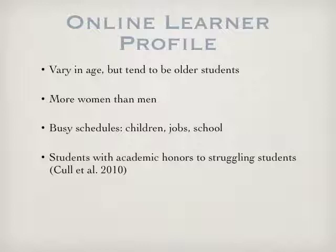It really varies — it's a range of students. They vary in age but we tend to have older students in online classes. Often there are more women than men. Many of our students have very busy schedules — they have children, full-time jobs, and they are also going to school. As far as academic achievement and potential, it really varies too. They span the spectrum from students with academic honors to struggling students.